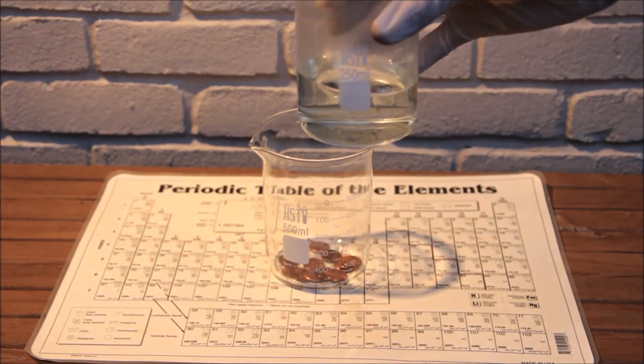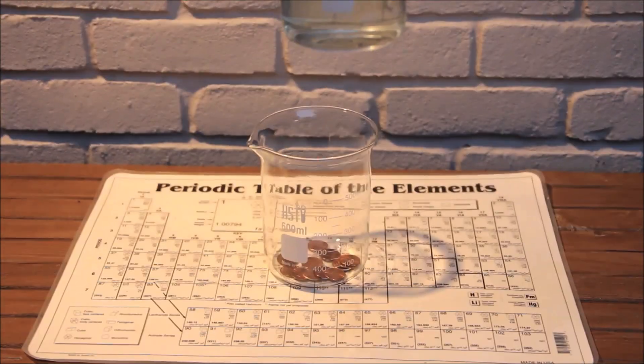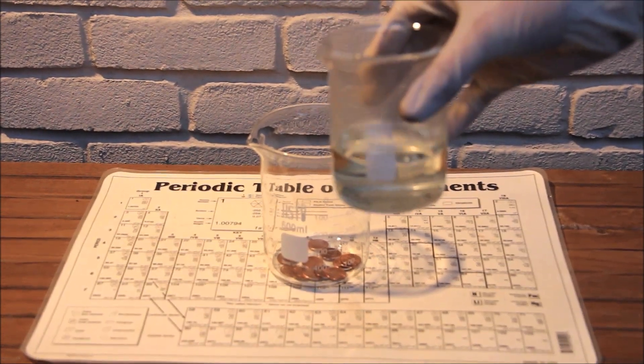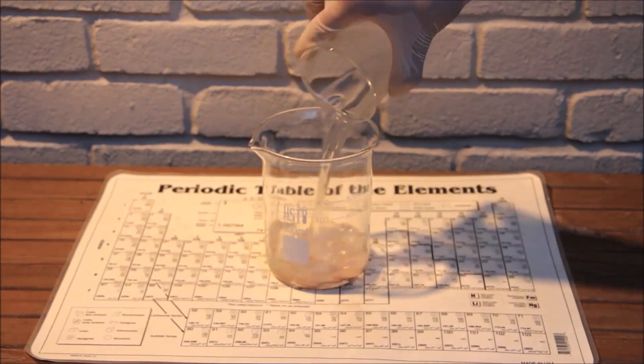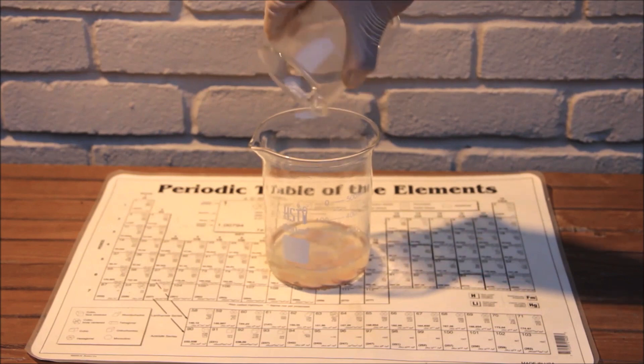You will also need a strong acid, such as hydrochloric acid or sulfuric acid. Here I have 31.45% hydrochloric acid, purchased as muriatic acid from the hardware store.